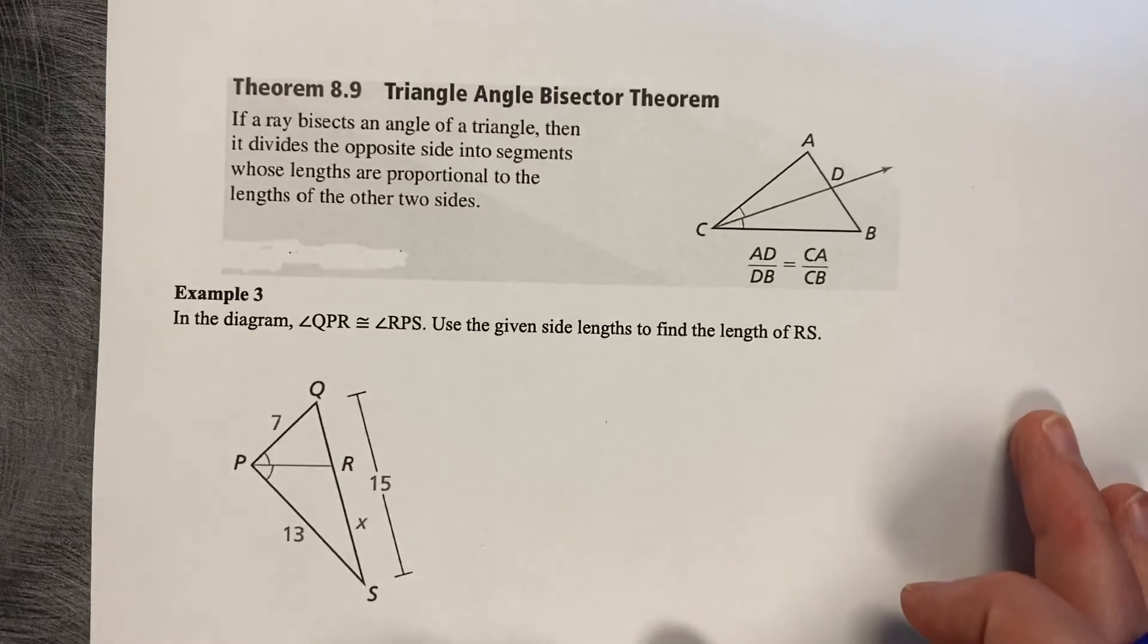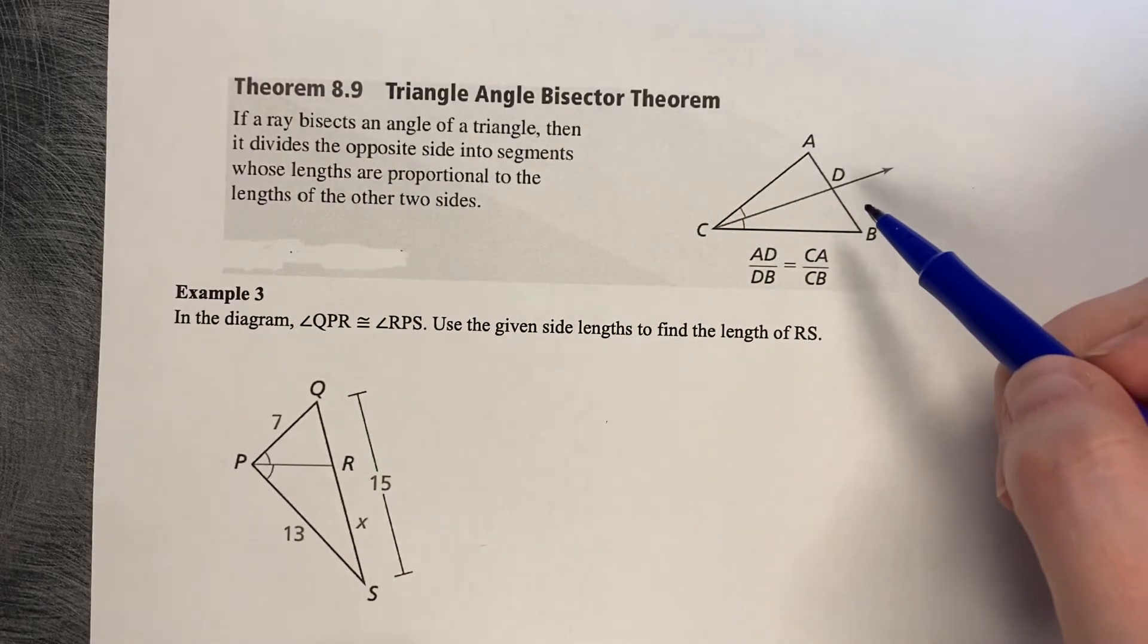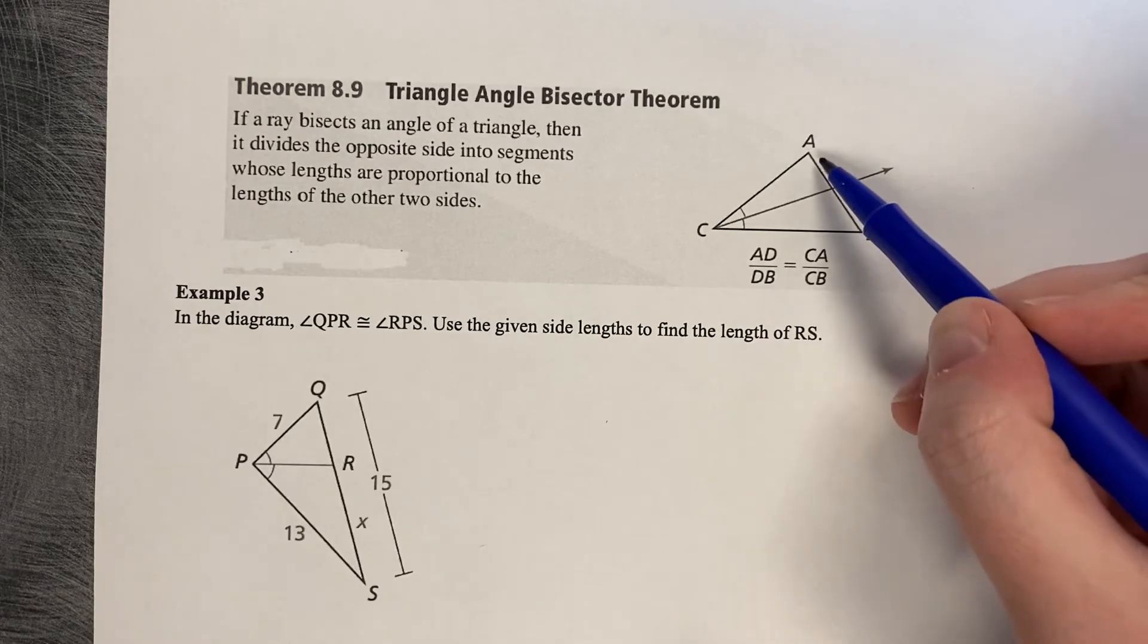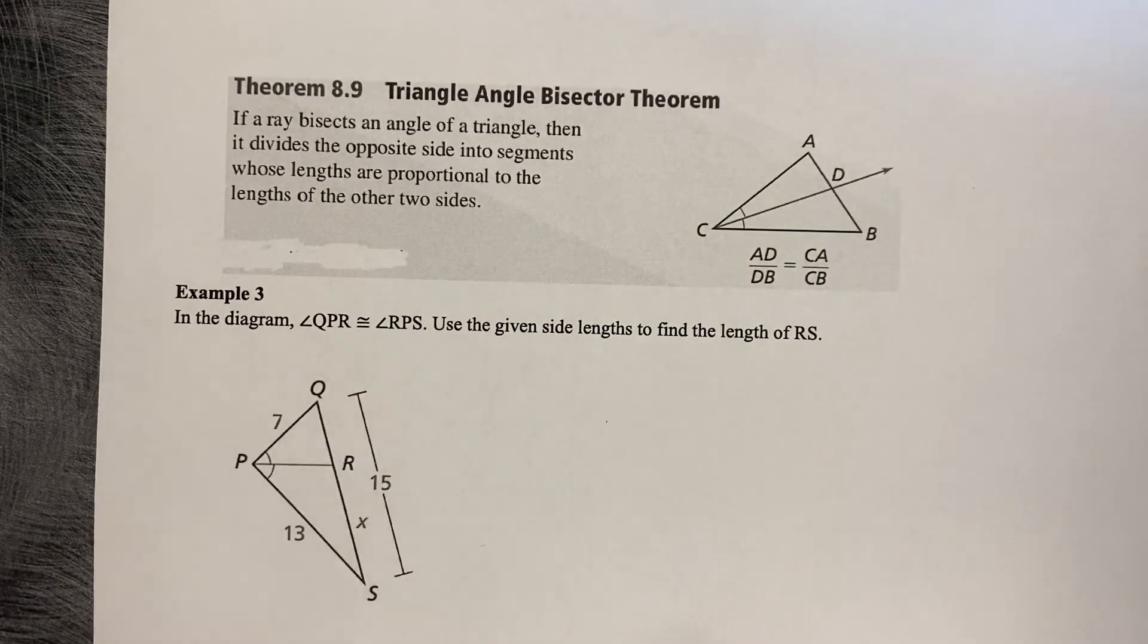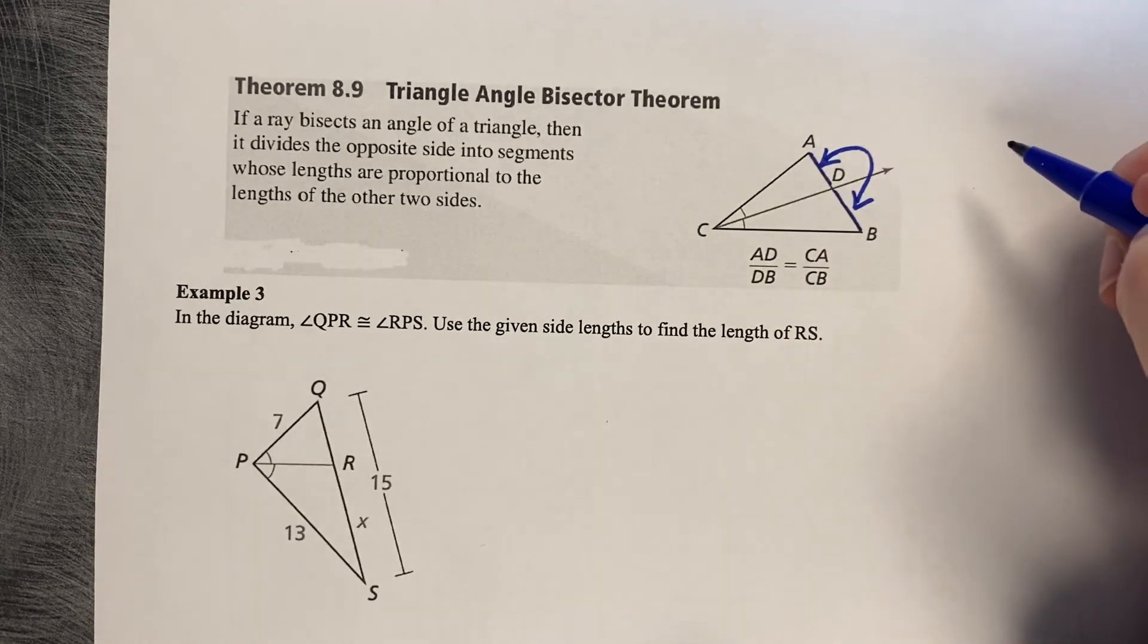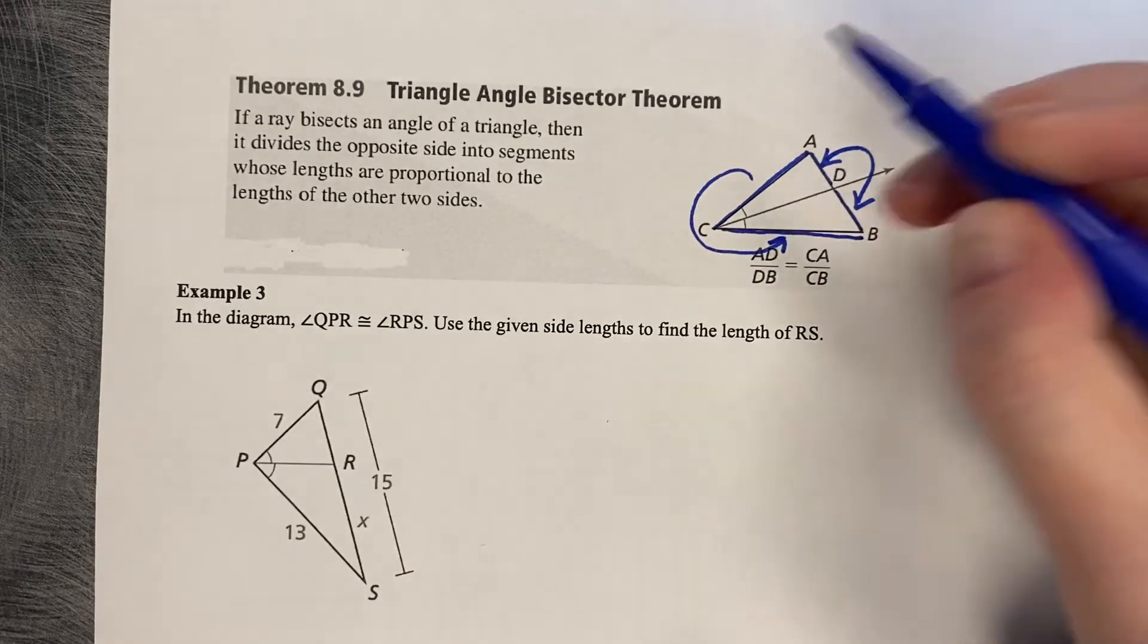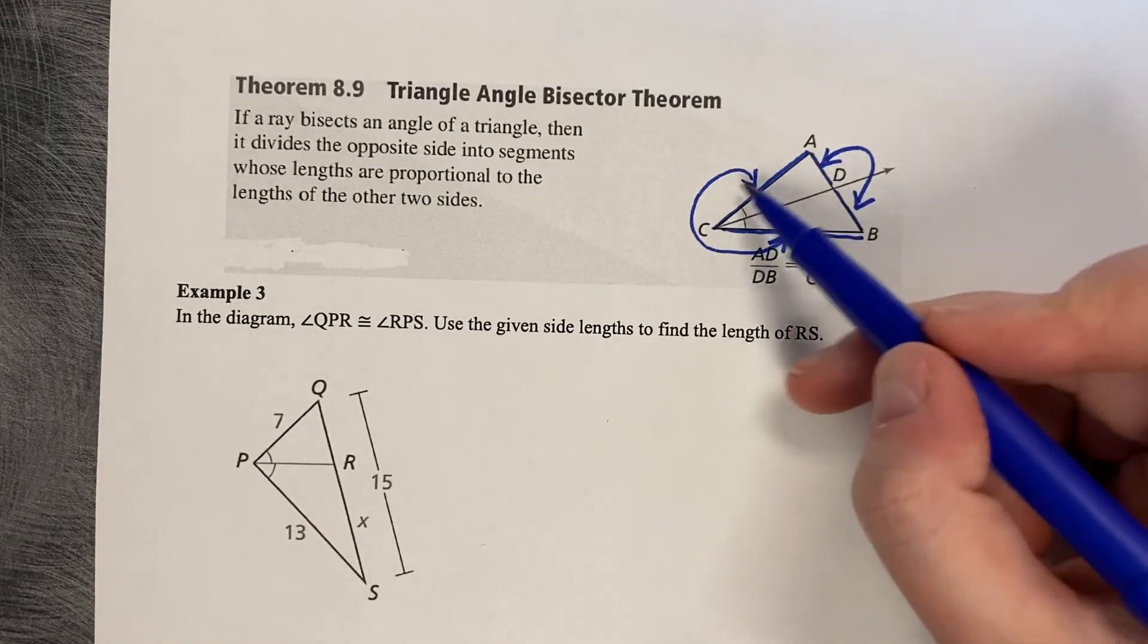The last one is called Theorem 8.9, the Triangle Angle Bisector Theorem. If a ray bisects an angle of a triangle, then it divides the opposite side into two segments whose lengths are proportional to the lengths of the other two sides. It does not mean that these two side lengths are equal. The length of AD is not equal to the length of DB. They're totally different lengths, but it makes them proportionate to the side lengths. So AD is proportionate to DB, and CA is proportionate to CB. The little base chunks are proportionate and the side lengths are proportionate.